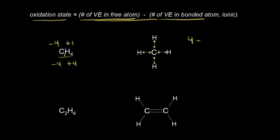From that number, we subtract the number of valence electrons carbon has in our drawing, but we need to think about these covalent bonds as ionic, so the more electronegative atom takes all the electrons in the bond. We're comparing carbon to hydrogen — carbon is more electronegative than hydrogen, so it takes both electrons in each bond, all the way around. Carbon is now surrounded by eight electrons.